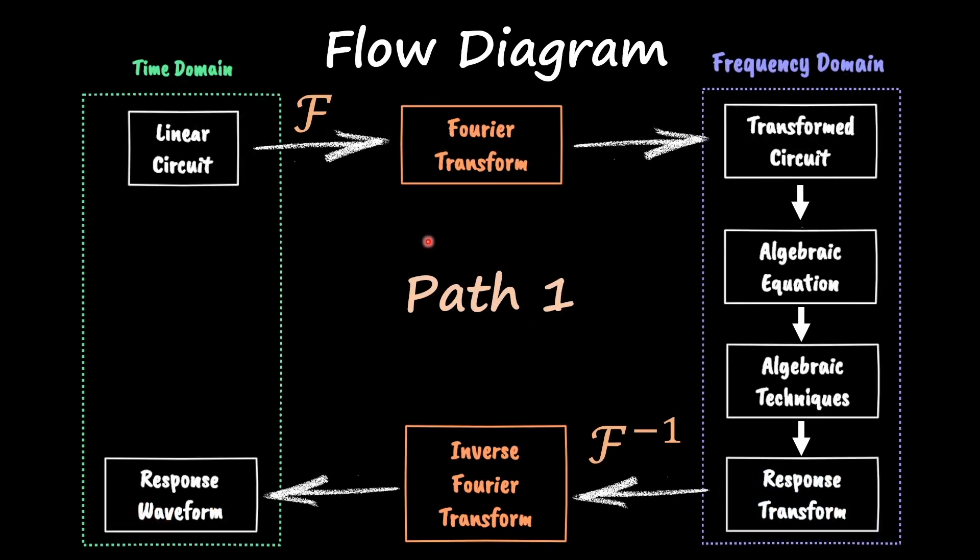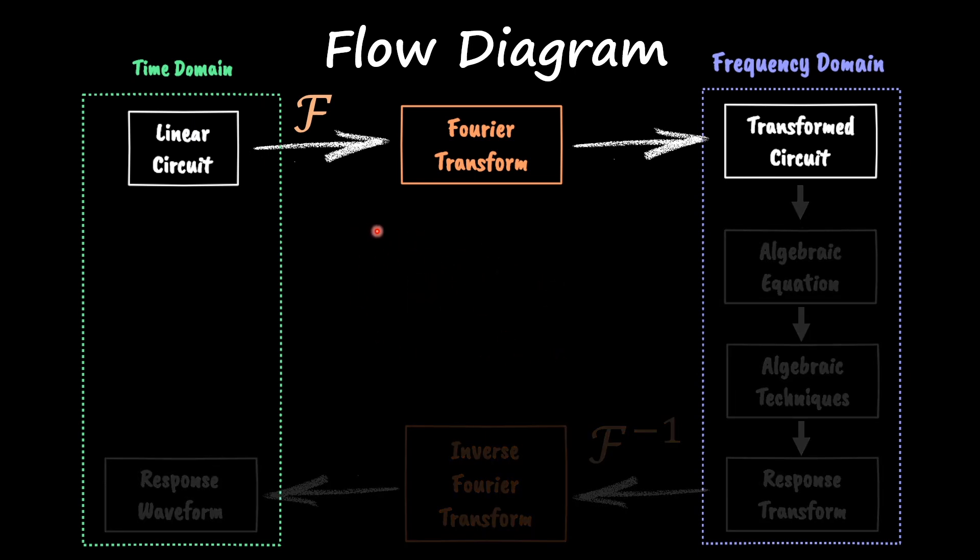Let's go over path number one of our Fourier transform and focus on this first part where we have our linear circuit and we want to get this transformed circuit. Remember that for Fourier transforms we don't need any initial conditions because we are studying our circuit in the steady state, no longer in the transient, which is quite different than Laplace.